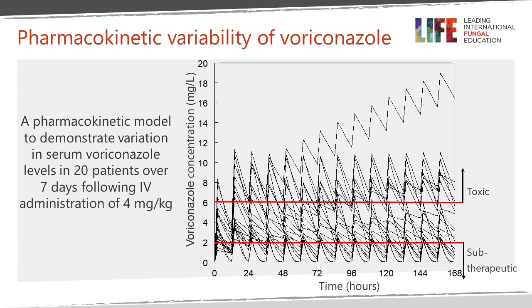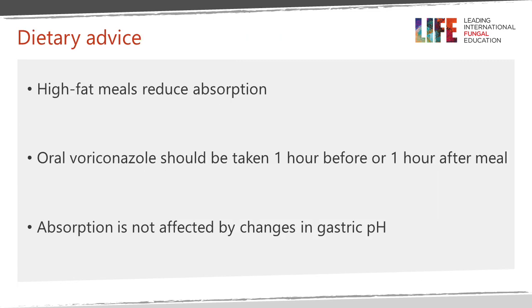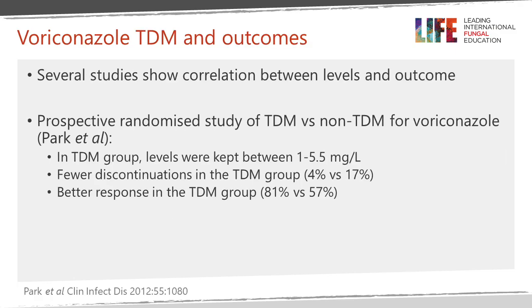Certain elements of the diet impact voriconazole levels: high-fat meals reduce absorption. We recommend voriconazole be taken before or after a meal, not around the time of the meal, and gastric pH is not important. Several studies show a correlation between levels and outcome. In one prospective randomized study, patients who had levels reported to clinicians versus those who didn't were more likely to stay on drug with many fewer discontinuations, and the response rate was also higher in those who had TDM — because this is a very effective drug and a switch to an inferior drug impacts outcome.